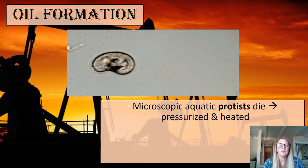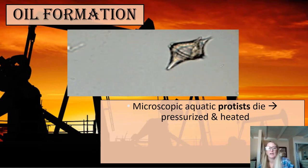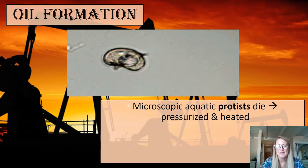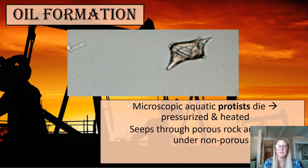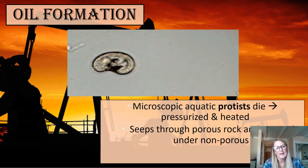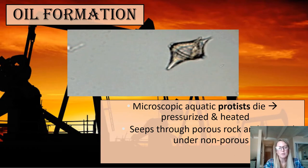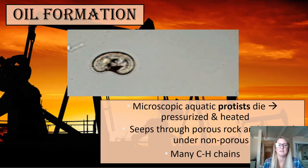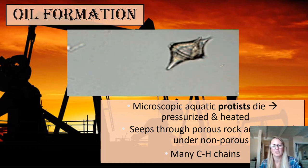Oil is created from dead microscopic organisms. These dead microscopic organisms sink to the bottom of a waterway and they build up, and over time they get exposed to heat and pressure and they turn into oil. Because they are tiny, they can seep through porous rock, and when they get to a non-porous structure, they stop moving and accumulate and build up, leading to these large deposits that will eventually turn into oil.